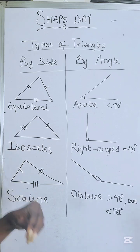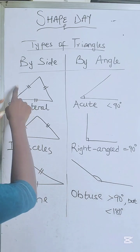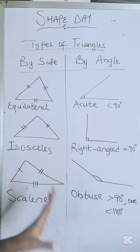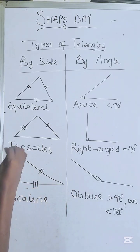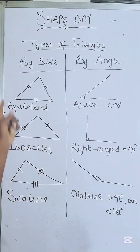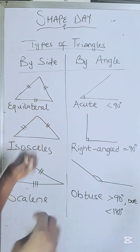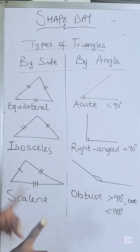For the first one, it's an equilateral triangle straight to the point. From the word equal, all of its sides are equal. And also note that the angles here are 60 degrees because the sum of the angle in a triangle is 180 degrees. Let's move on.